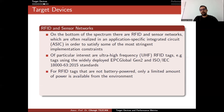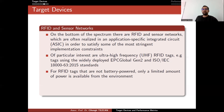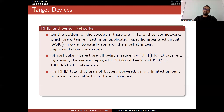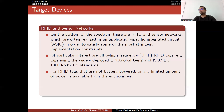Of particular interest are ultra-high-frequency RFID tags, for example tags using the widely deployed EPCglobal Generation 2 and ISO standards. For RFID tags that are not battery-powered, only a limited amount of power is available from the environment. This is valid for smart cards too — they generally don't have any battery at all. When you move them next to a reader, due to the reader's radio frequency or electromagnetic field, they receive a very limited amount of power, so you can only do a small amount of work with those devices.